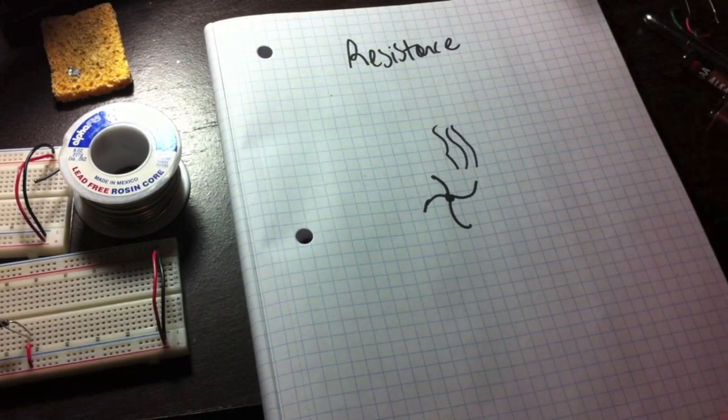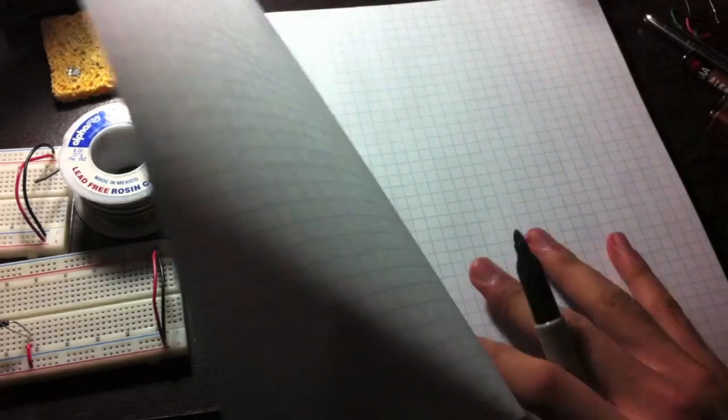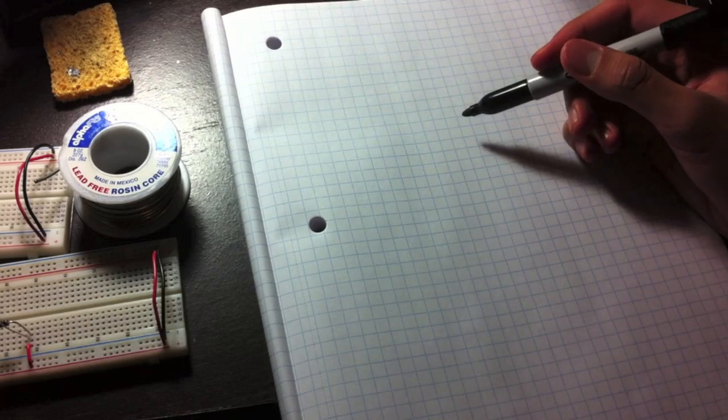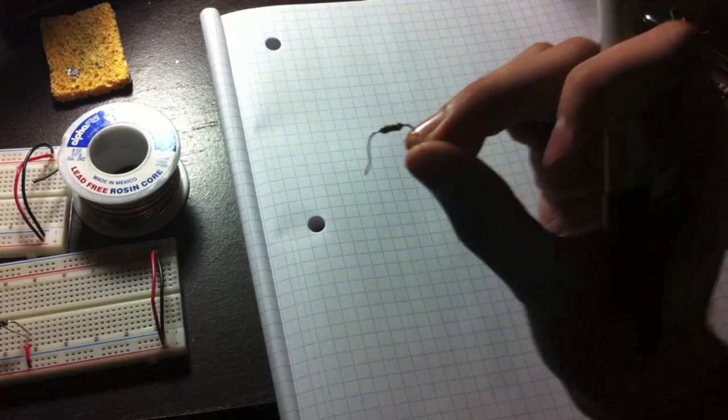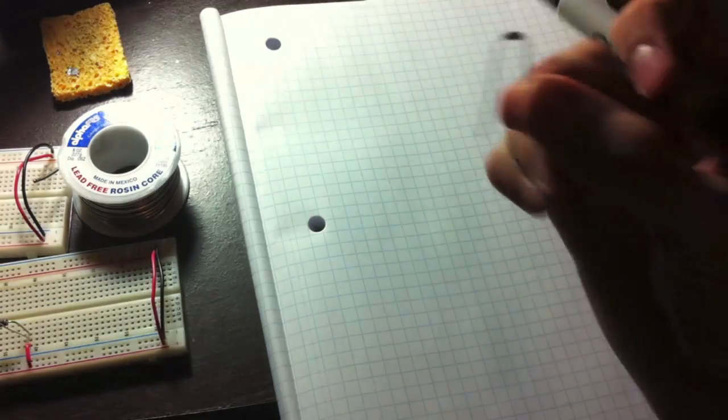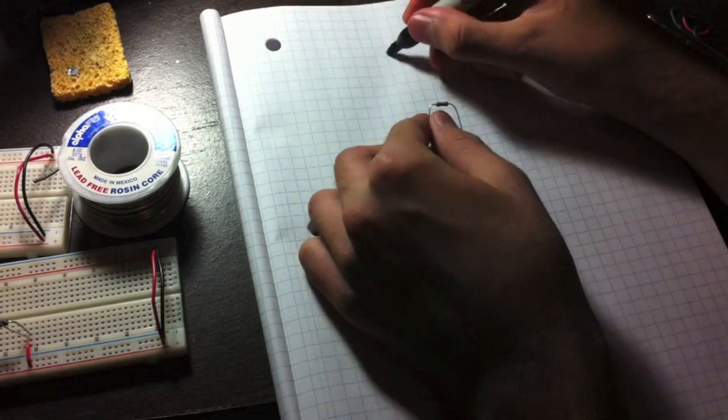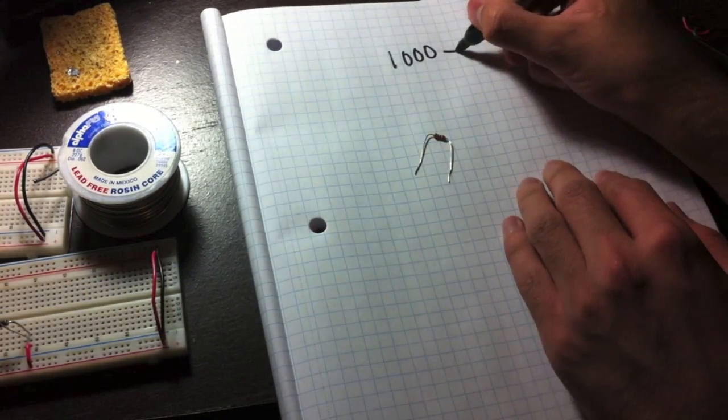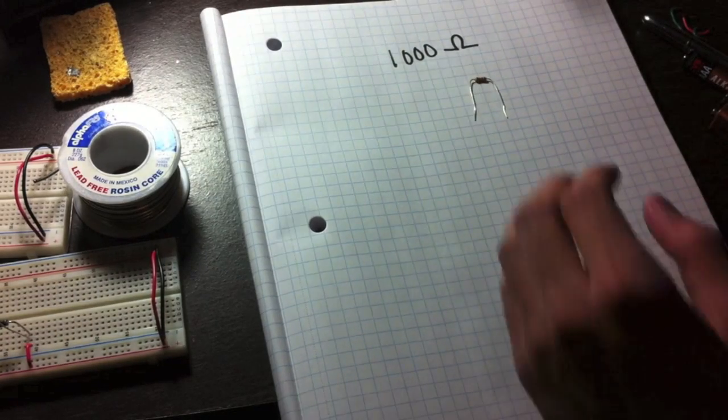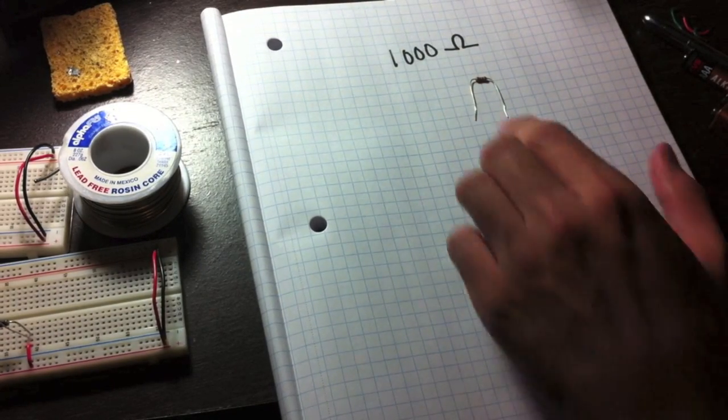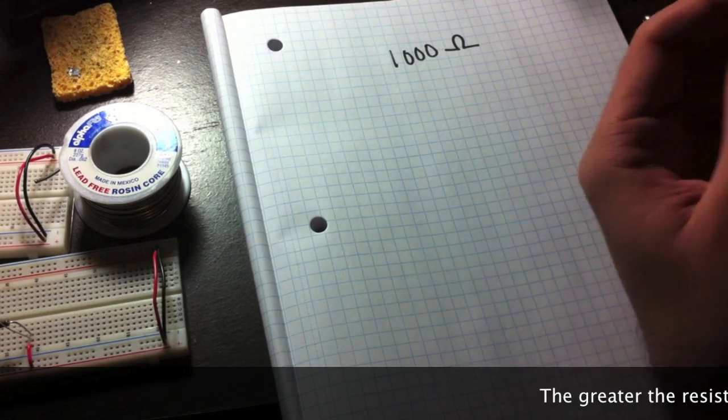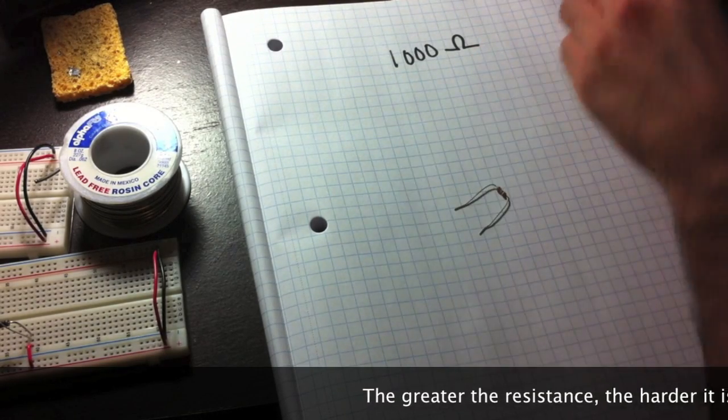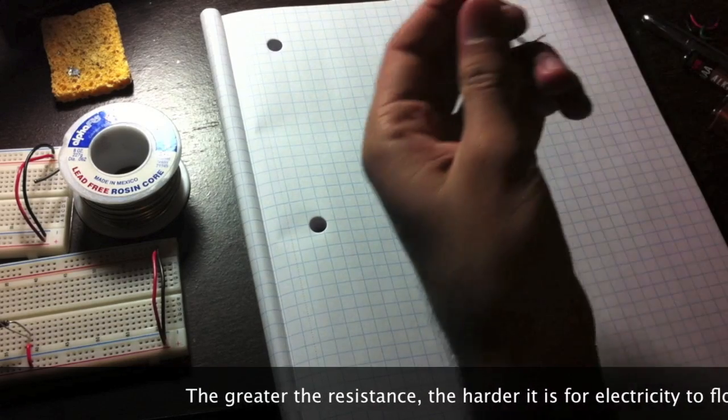That's what resistance is, it's the opposition. So in a circuit, resistance is simply the opposition for the electrons to flow through. So we have a component here which is called a resistor. This one is 1,000 ohms. There's a value for this resistor, or 1k ohm or 1 kilo ohm. So this is 1,000 ohms, which means this probably has a greater resistance than like a wire. Because even wires have resistance.